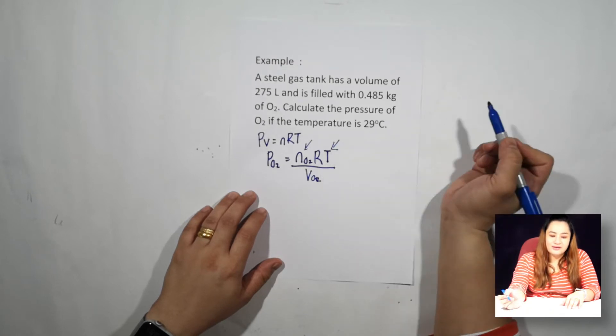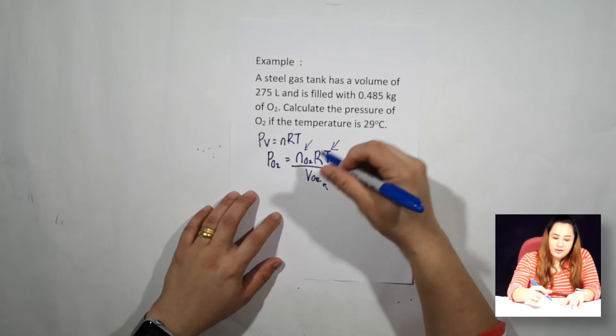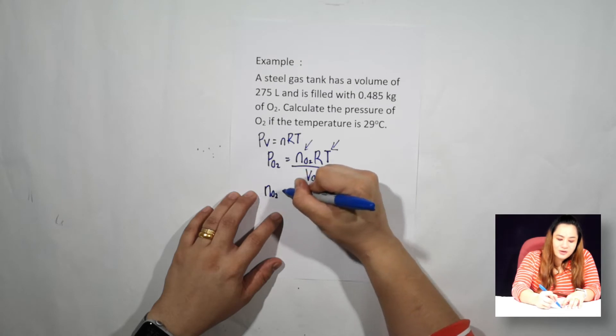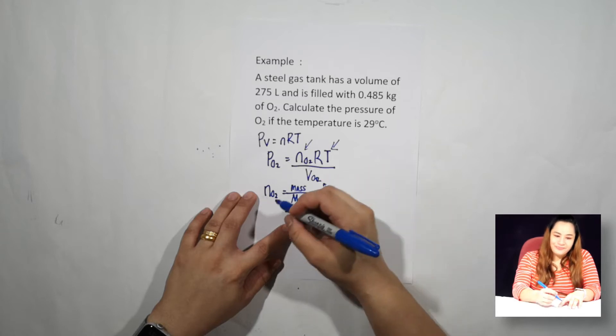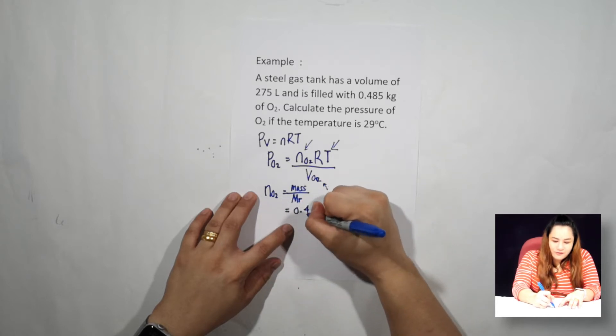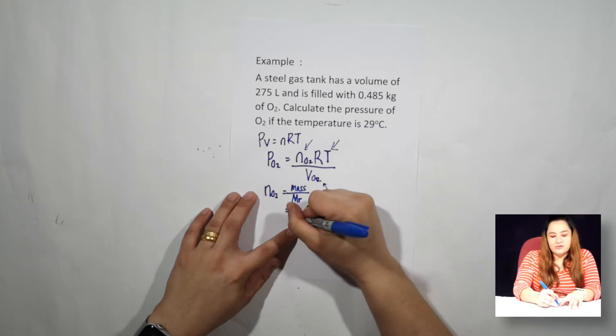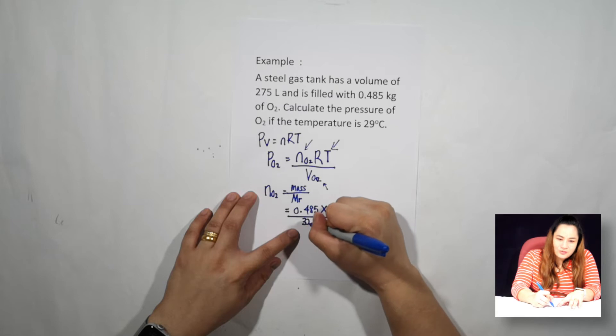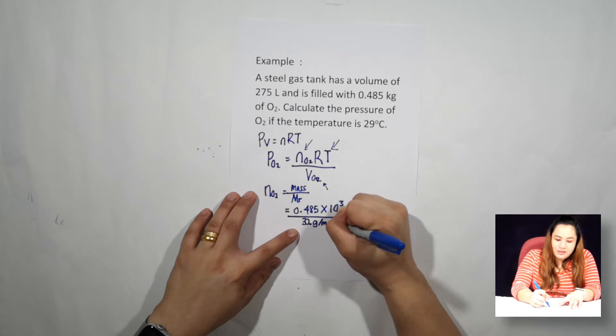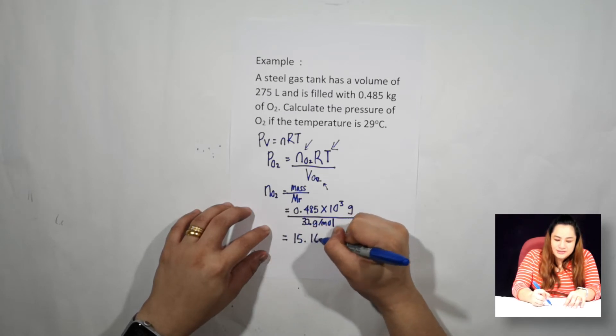So now you need to find the number of moles of oxygen. Temperature in kelvin. Volume is already given as 275 liters. So number of moles of oxygen we can use mass over molar mass. The mass of the oxygen you need to convert into grams. So 0.485 times 10³ convert into grams over molar mass of the oxygen which is 32 grams per mol. So the number of moles of oxygen after calculation you will get 15.16 mol.